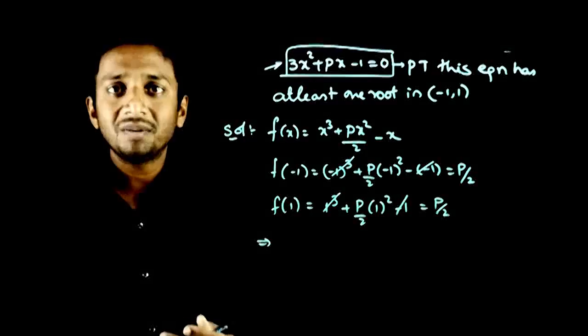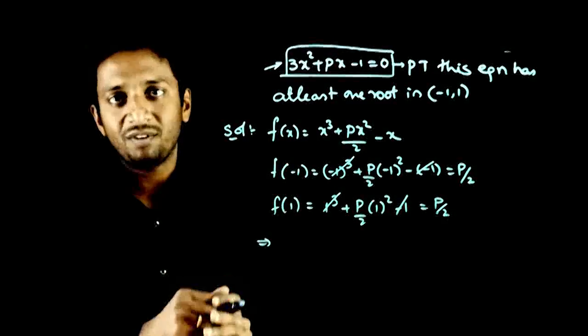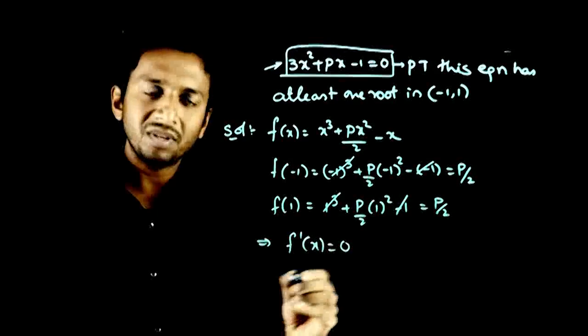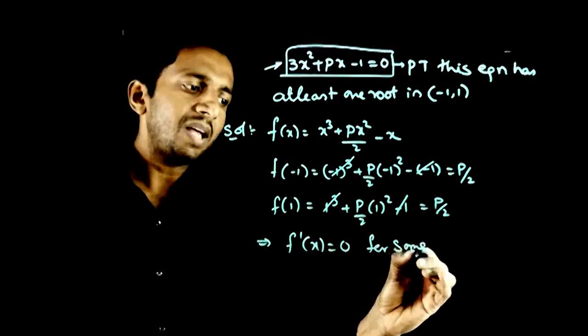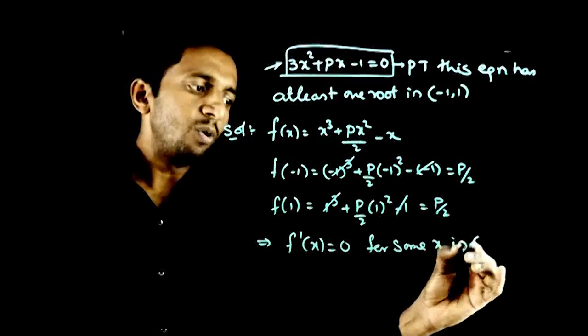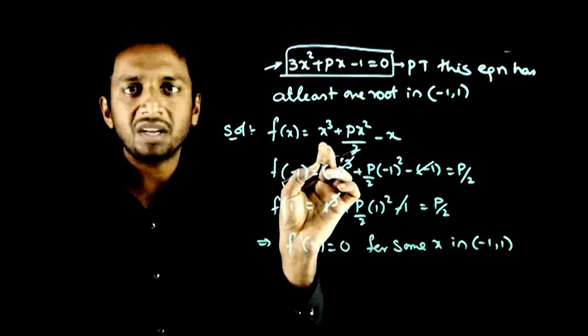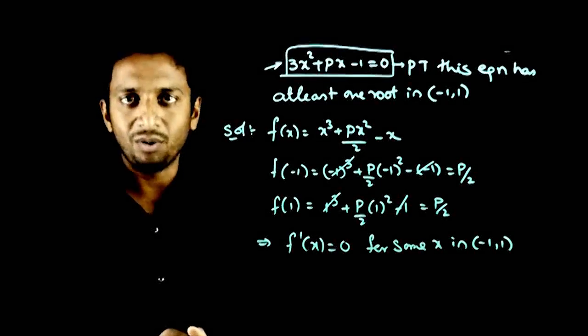What does Rolle's Theorem say? If f(a) equals f(b), then f'(x) = 0 for some x in the open interval (-1, 1). Between -1 and 1, this function's differentiation must be 0 somewhere.